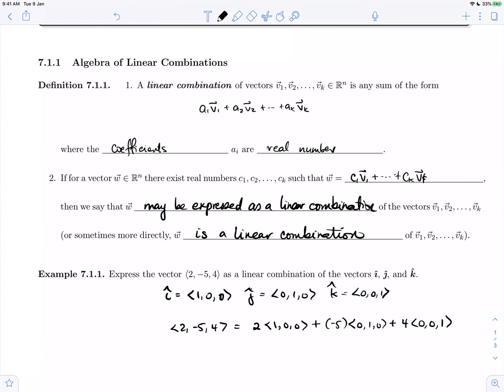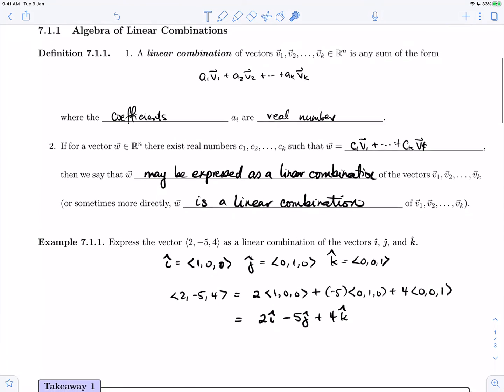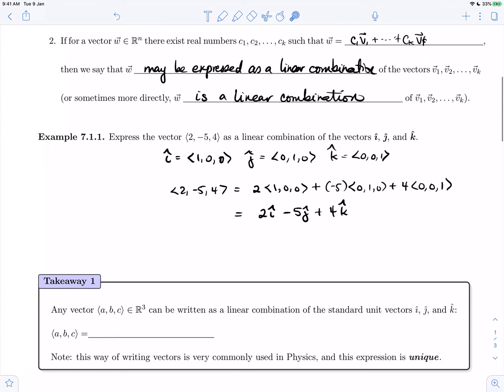Constant times vector plus constant times vector plus constant times vector, or 2i-hat minus 5j-hat plus 4k-hat. That is exactly the form of our linear combination, so we have done what was asked. We have expressed the vector (2, -5, 4) as a linear combination of the vectors i-hat, j-hat, and k-hat.